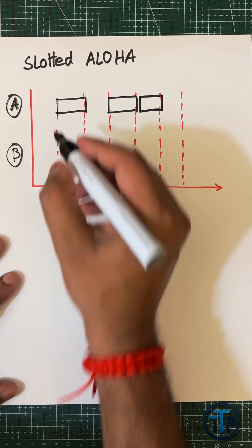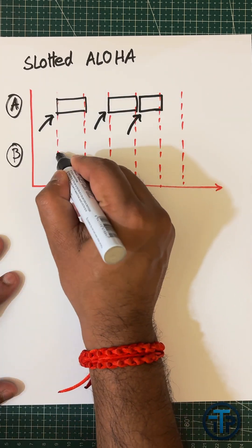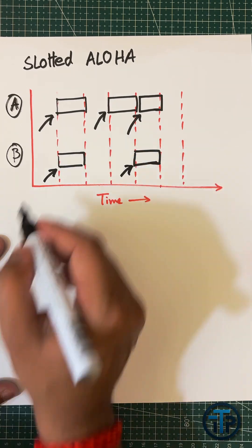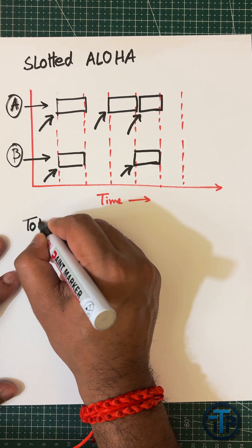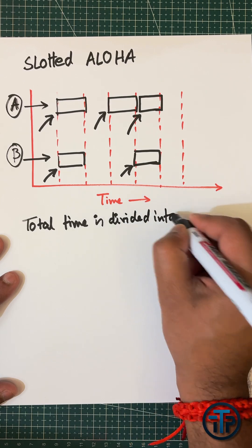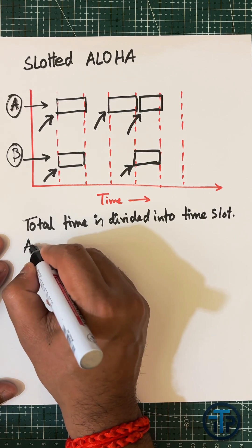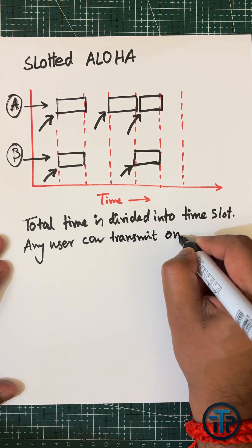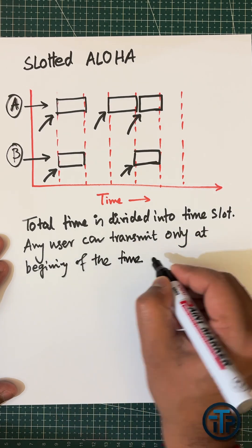All the users will be allowed to transmit only at the beginning of the time slot. In between the time slot, they will not be allowed to transmit any packet. To repeat: total time is divided into smaller time slots, and then any user can transmit only at the beginning of the time slot.